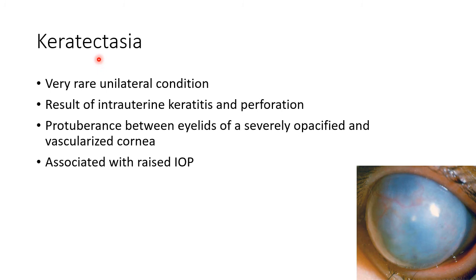Now let us discuss about keratectasia. It is a very rare unilateral condition, thought to be the result of intrauterine keratitis and perforation. In keratectasia, there is protuberance between the eyelids of a severely opacified and vascularized cornea, as seen in this picture. Keratectasia is associated with raised intraocular pressure.